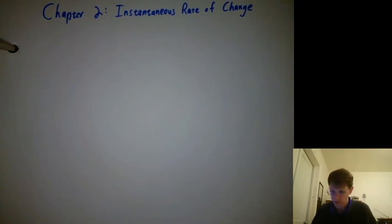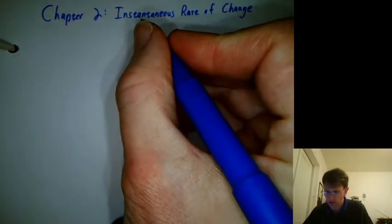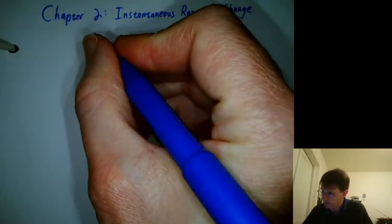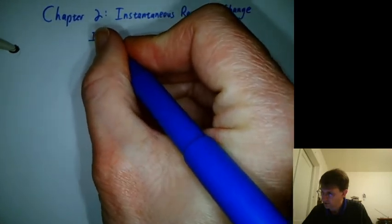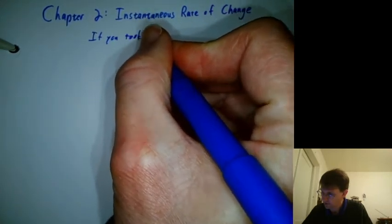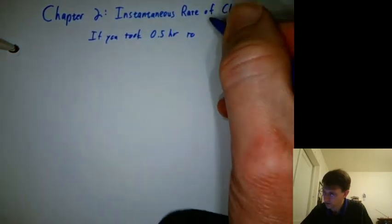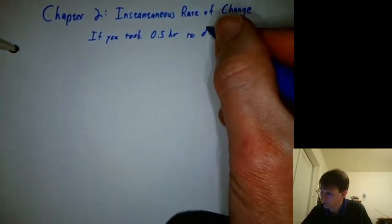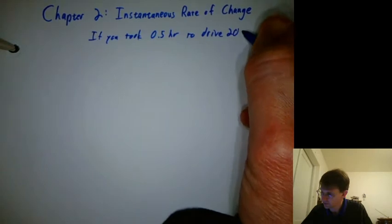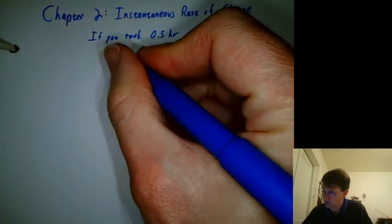We're launching into Chapter 2 now. We're going to do some paper and pencil work. We're talking about rates of change. Let's ask a simple question: if you took a half hour to drive 20 miles, what was your speed?